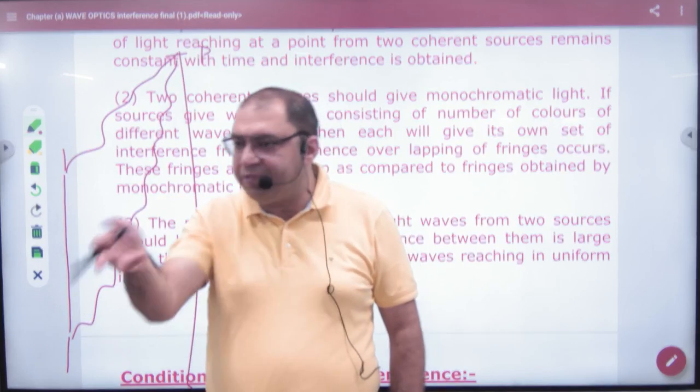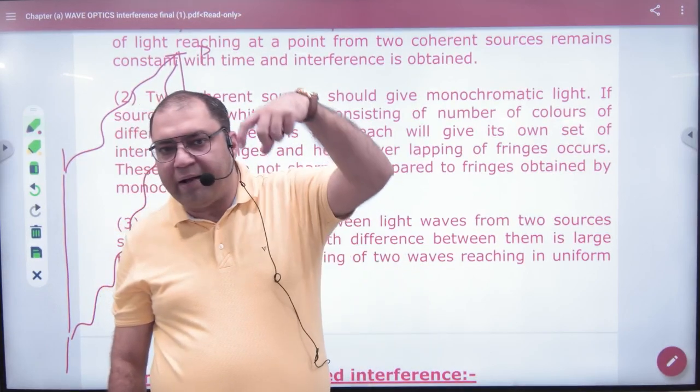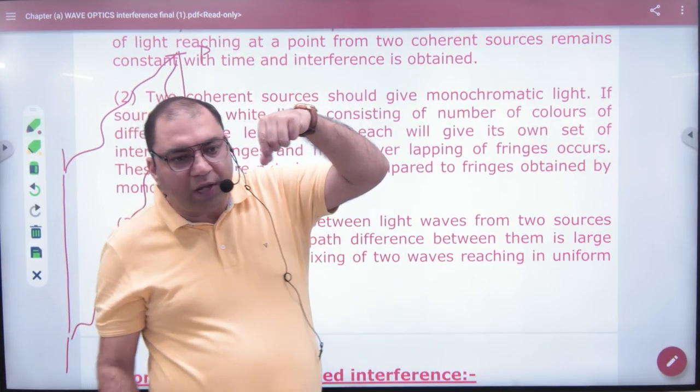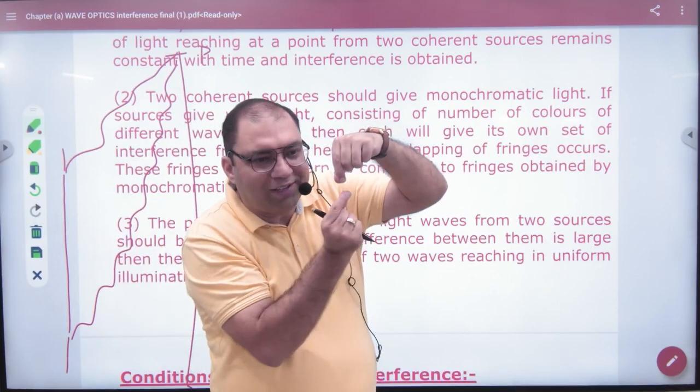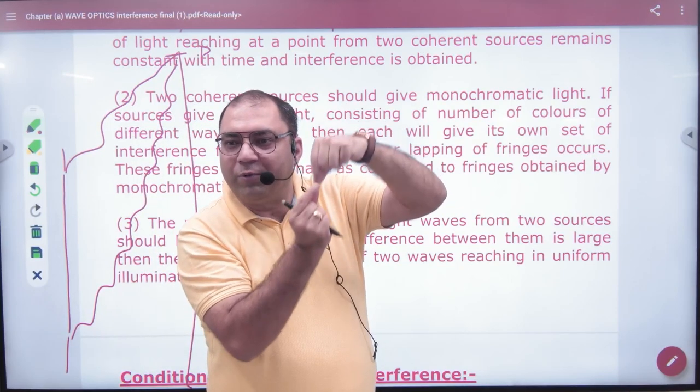If the intensity decreases, the amplitude will decrease. So one amplitude is 2 cm, the other one is 1 mm because the path was too much. So how will the overlap happen? How will the cancellation happen?